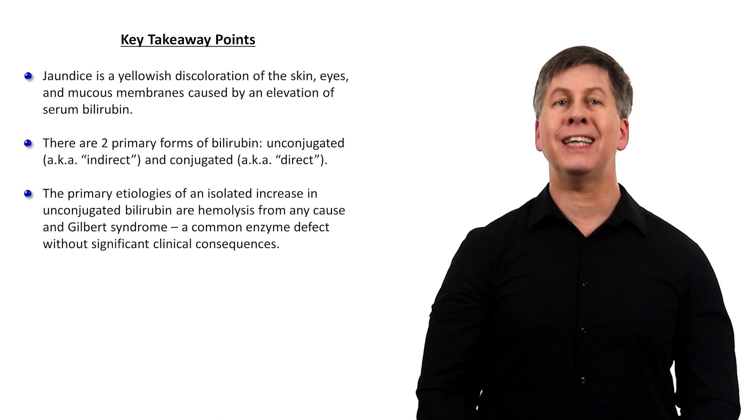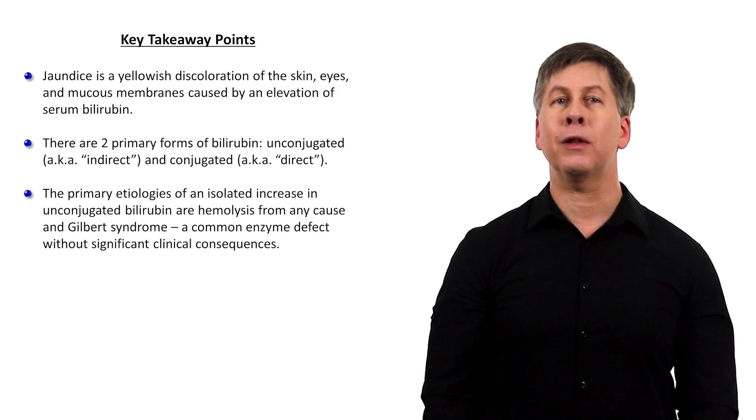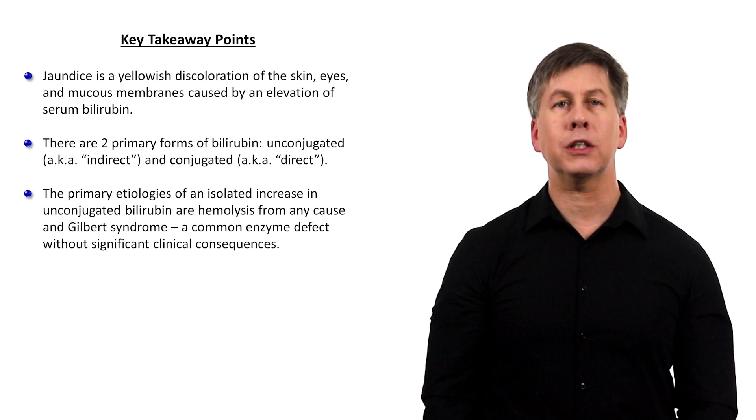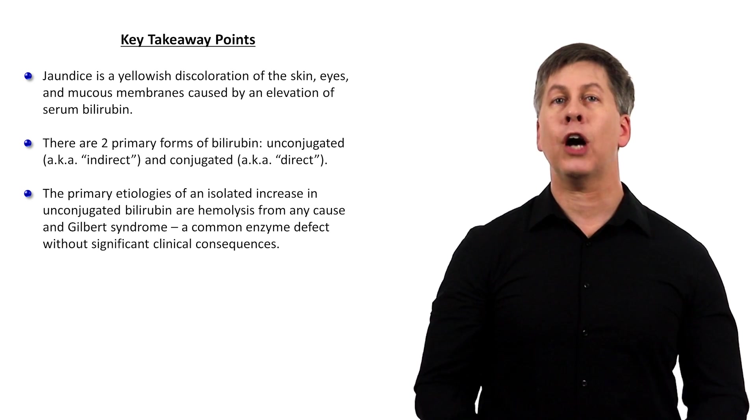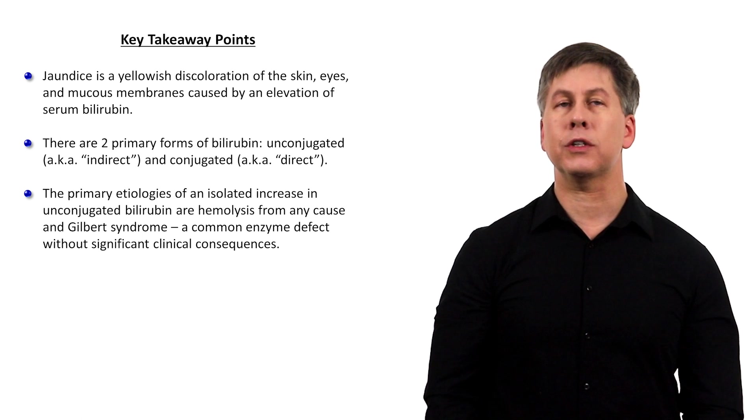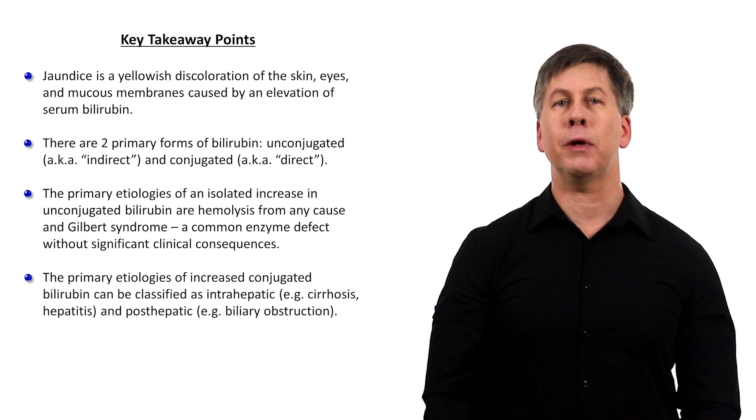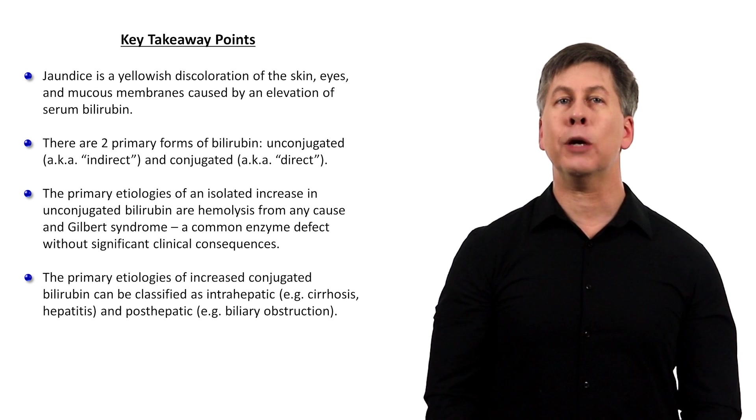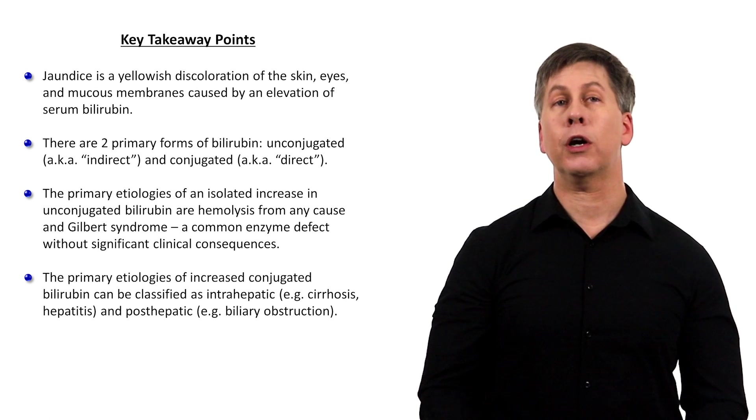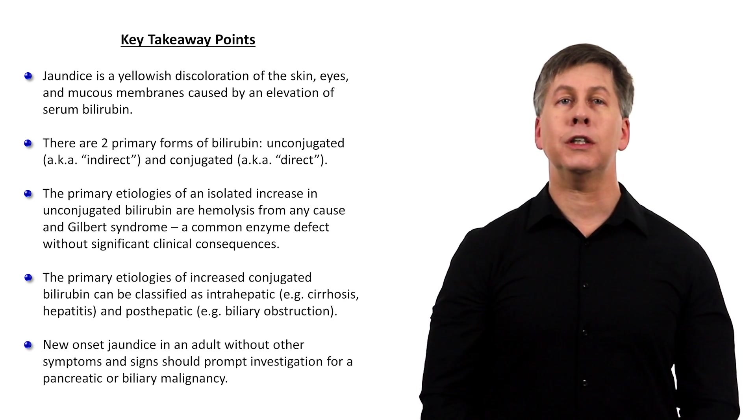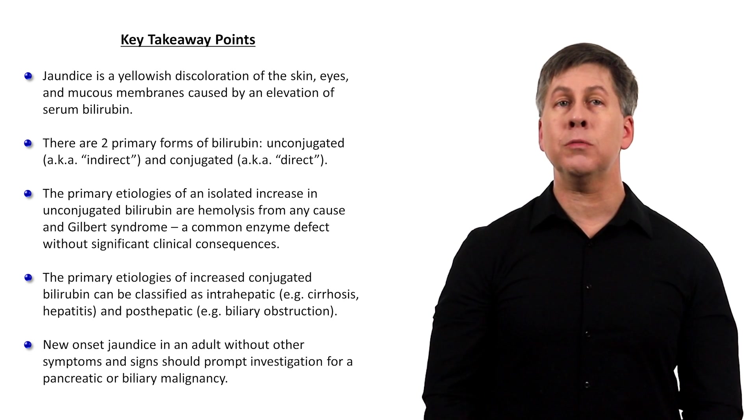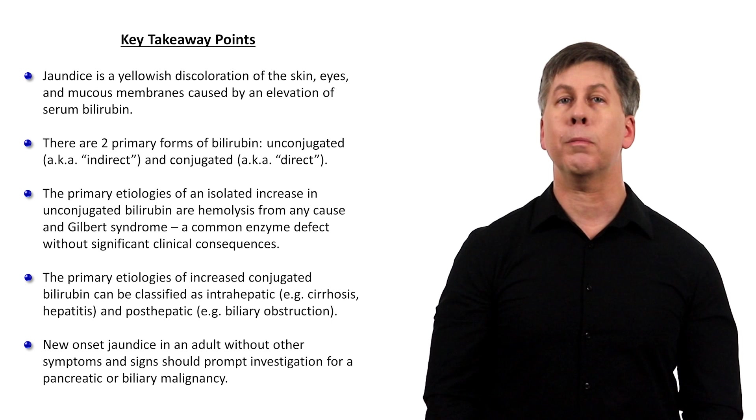The primary etiologies of an isolated increase in unconjugated bilirubin are hemolysis for many cause and Gilbert syndrome, a common enzyme defect without significant clinical consequences. The primary etiologies of increased conjugated bilirubin can be classified as intrahepatic, such as seen from cirrhosis and hepatitis, and posthepatic, such as from biliary obstruction. New-onset jaundice in an adult without other symptoms and signs should prompt investigation for a pancreatic or biliary malignancy.